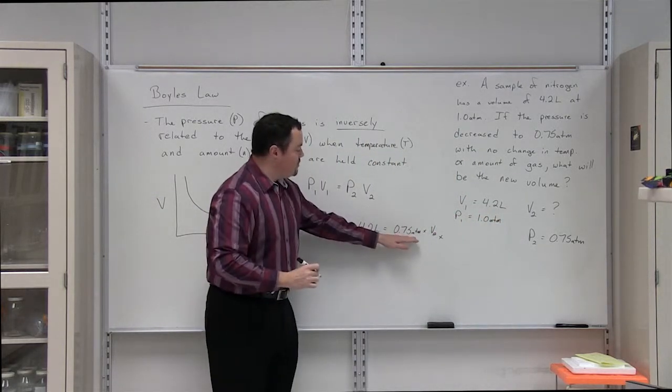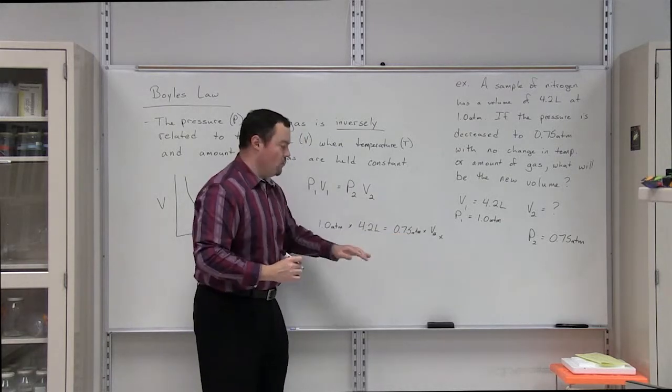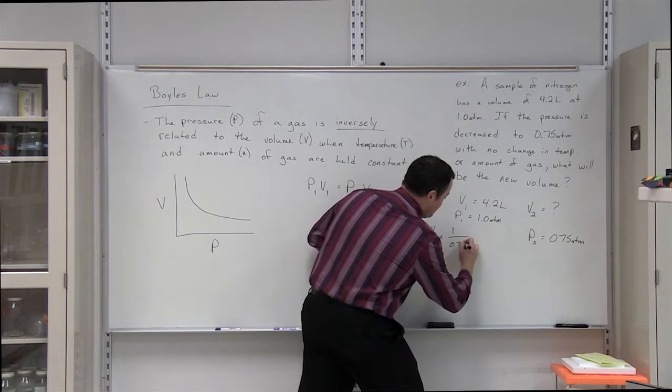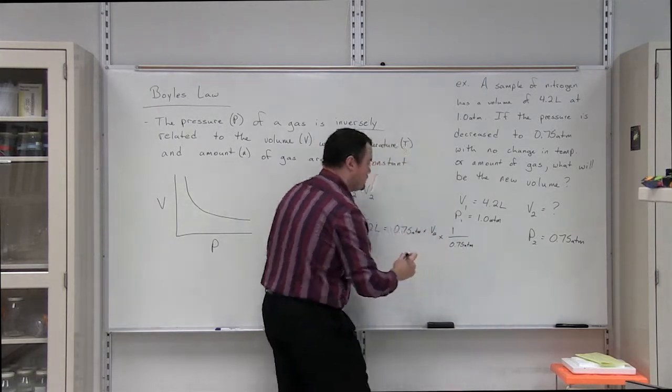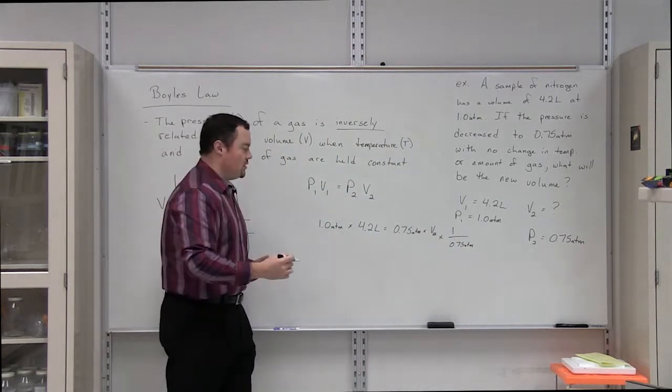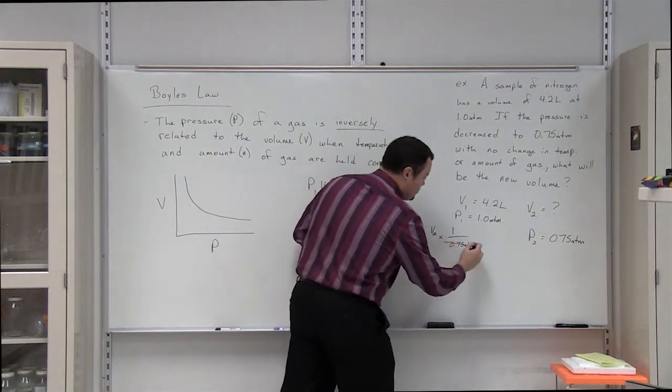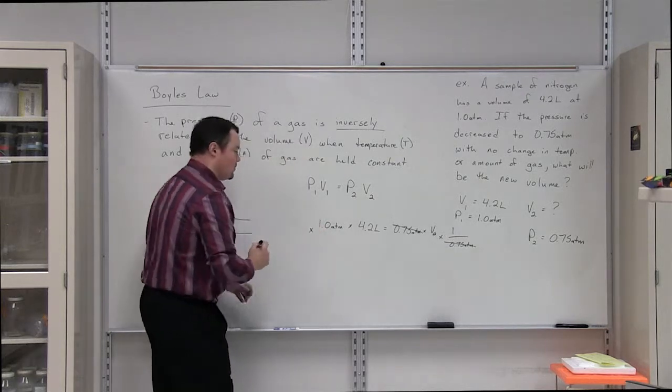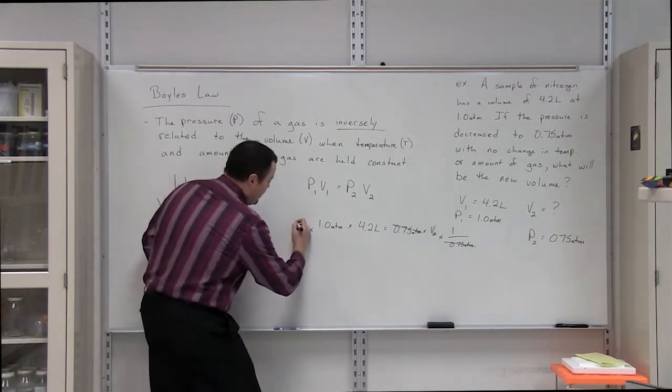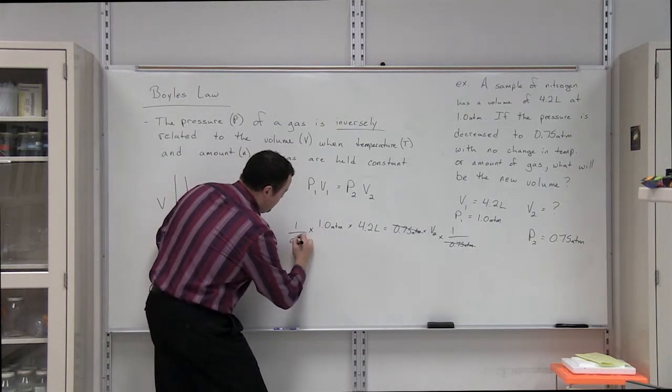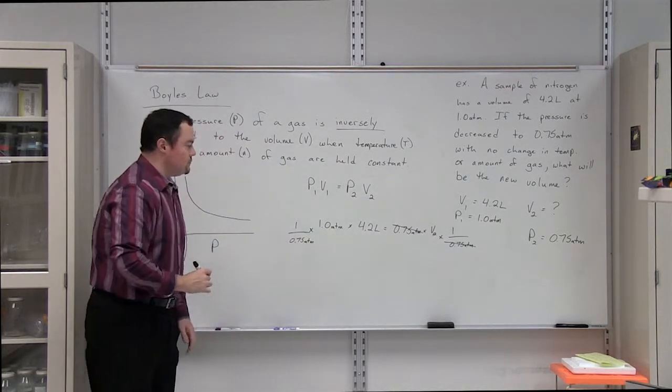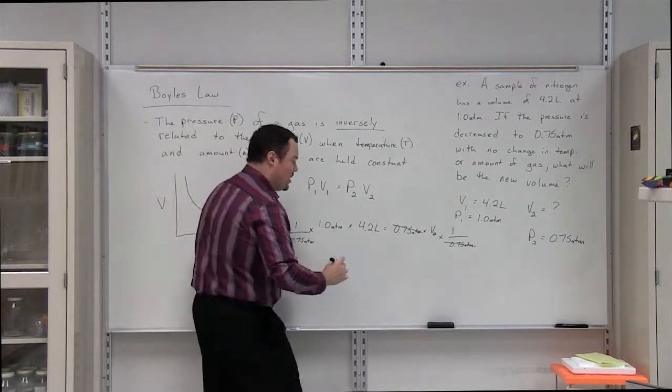The inverse of 0.75 atmospheres in the numerator is going to be 1 over 0.75 atmospheres. What that allows us to do is cancel those values out. What we do to one side of the equal sign, we always have to do to the other side. So, we're going to multiply this side by 1 over 0.75 atmospheres.